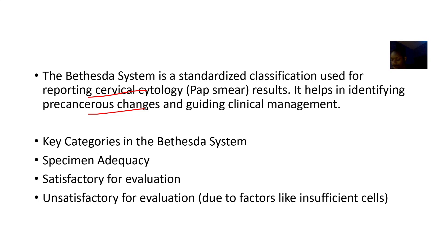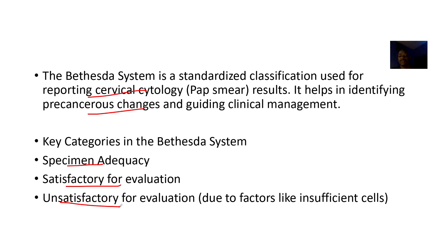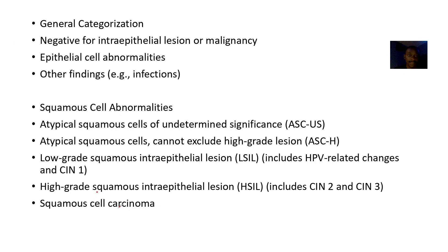The key categories in the Bethesda system start with specimen adequacy. The specimen should be either satisfactory for evaluation or unsatisfactory for evaluation. Factors such as insufficient cells are considered here.